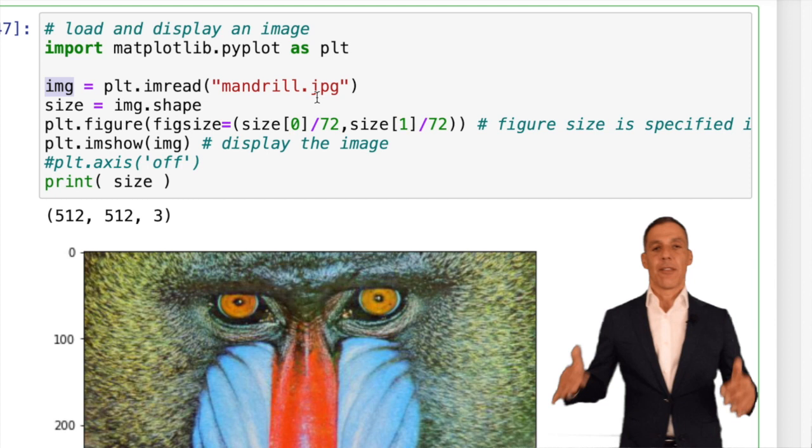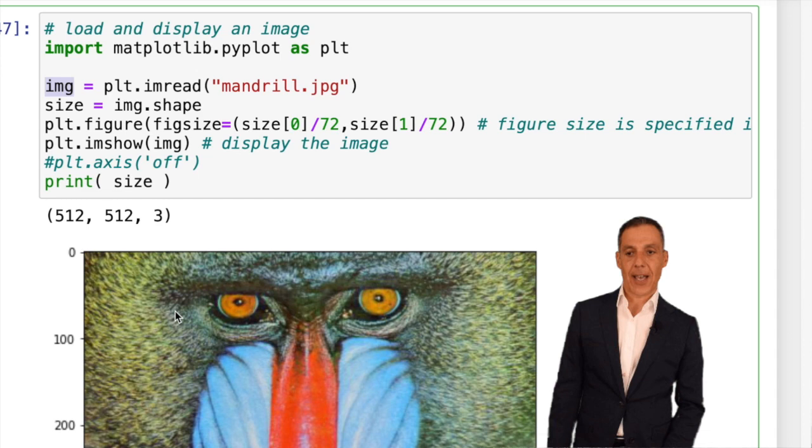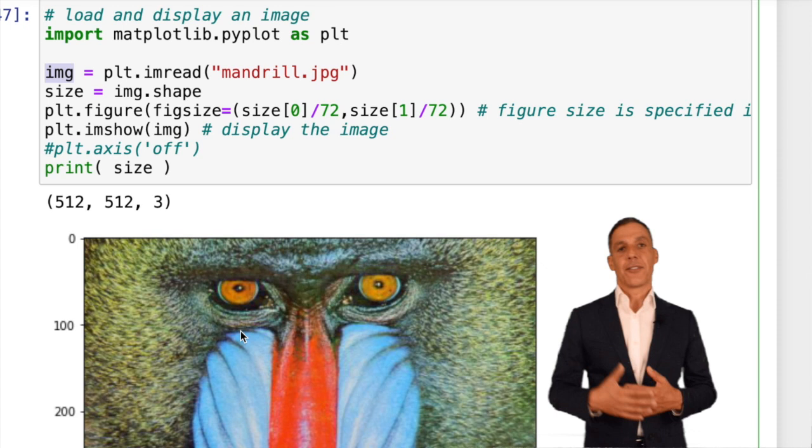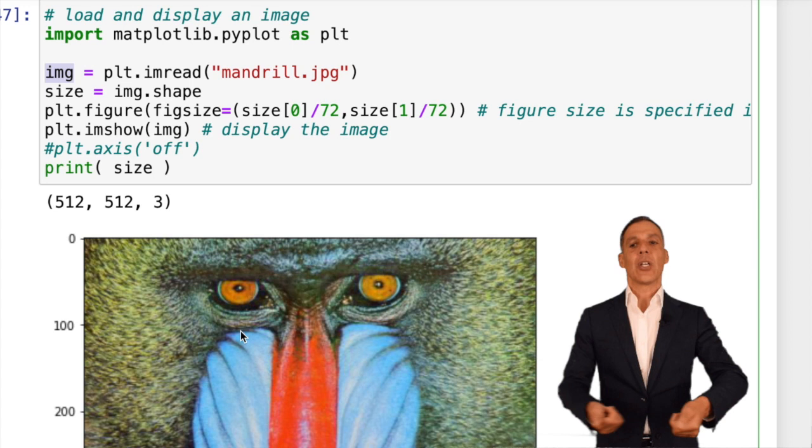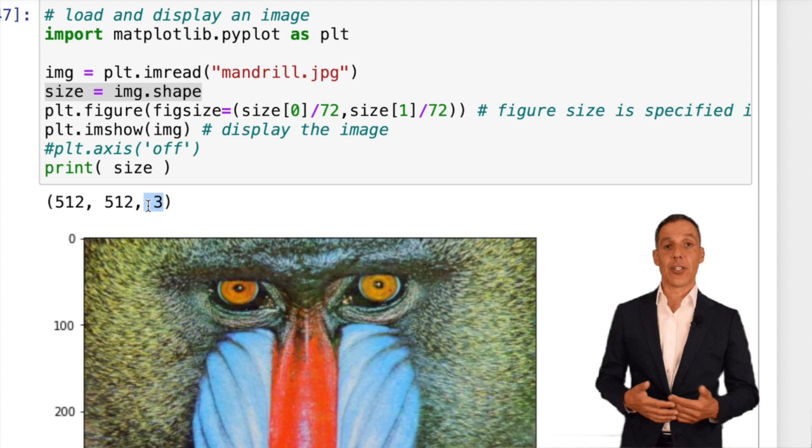IMG is now an image represented and stored as a three-dimensional matrix. XY corresponds to all of the pixels in this image, which is 512 pixels by 512. The third dimension is color. Digital images are made up of three channels: a red channel, a green channel, and a blue channel. When I print image.shape, you can see it's 512 by 512 by 3. So this is XY, the resolution, and 3 is the three-channel color image.